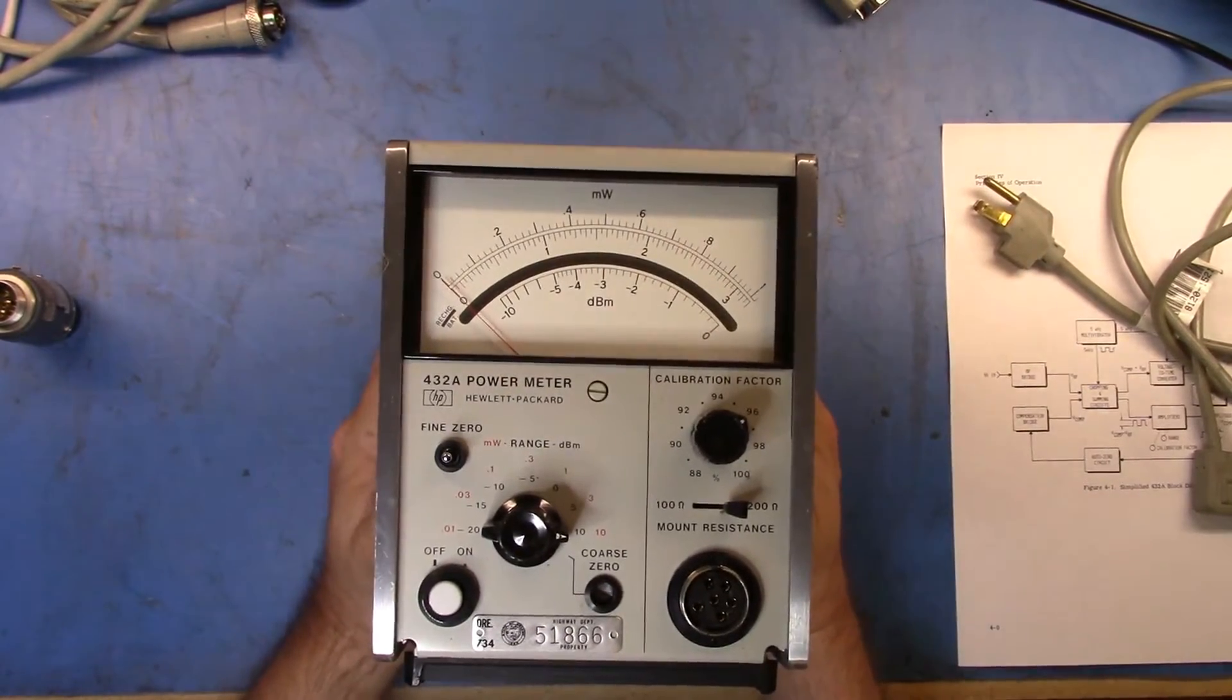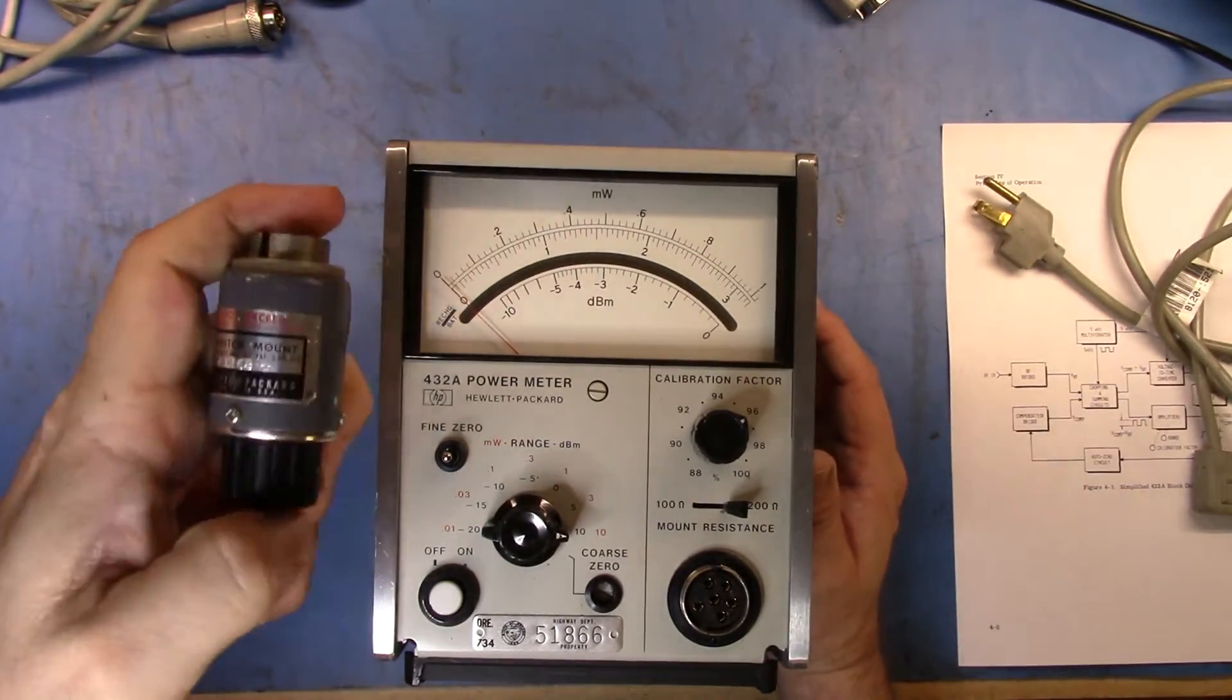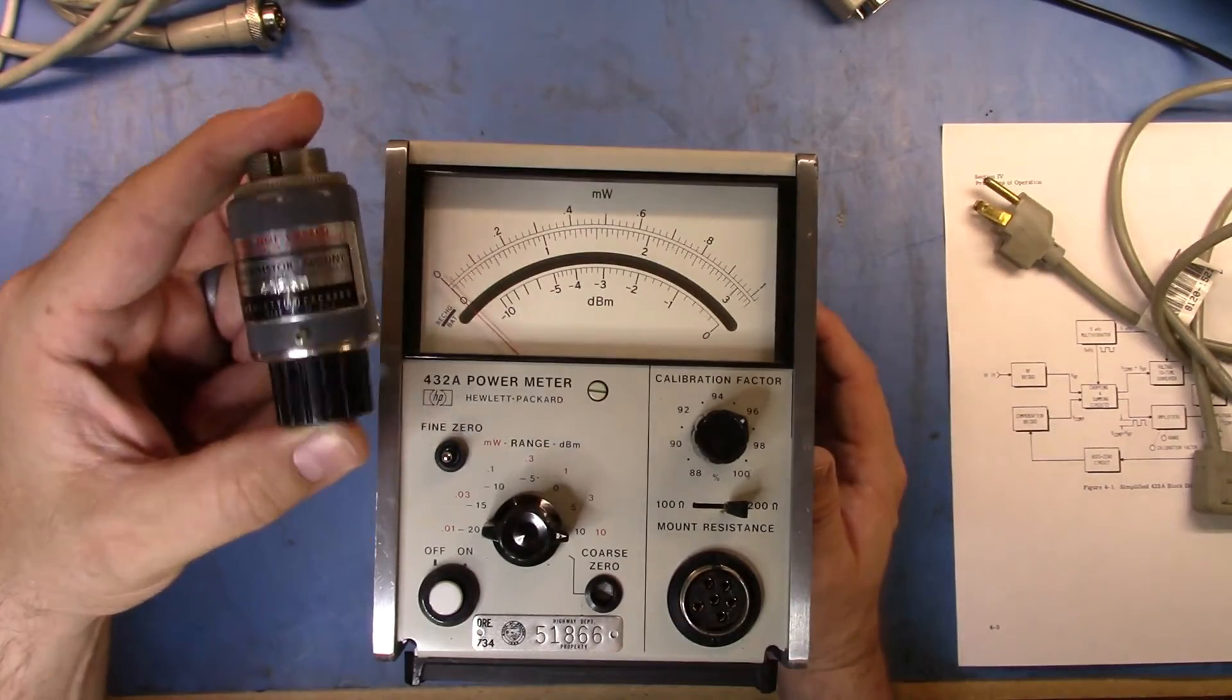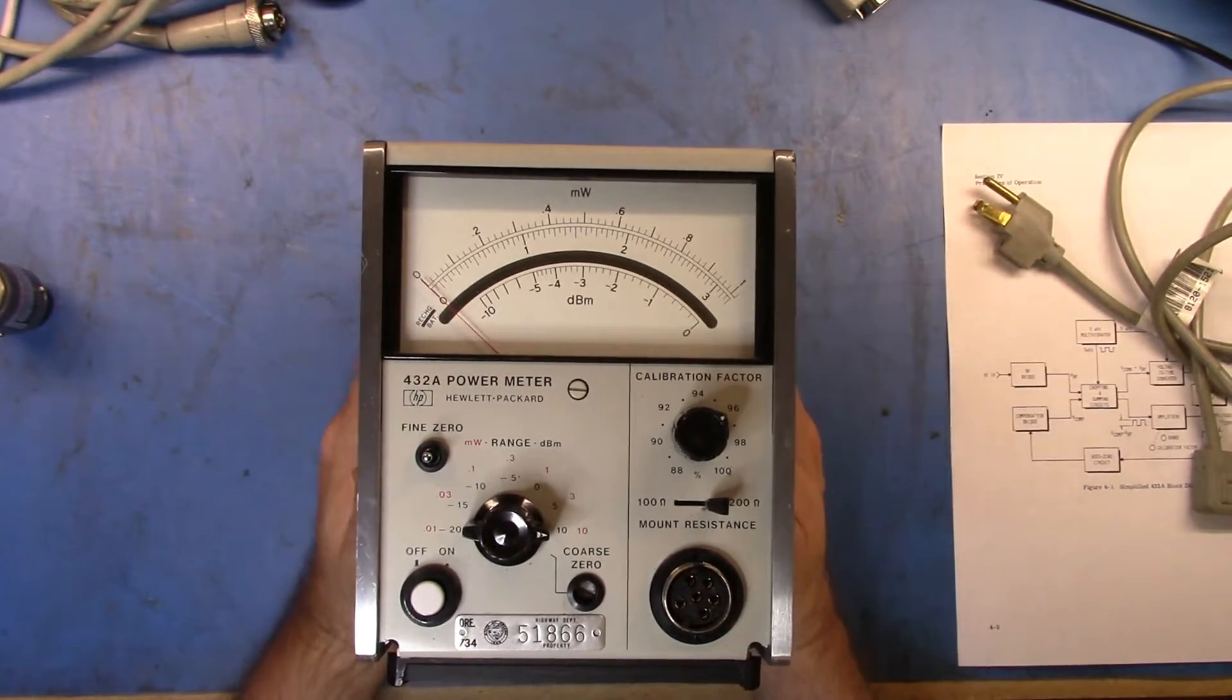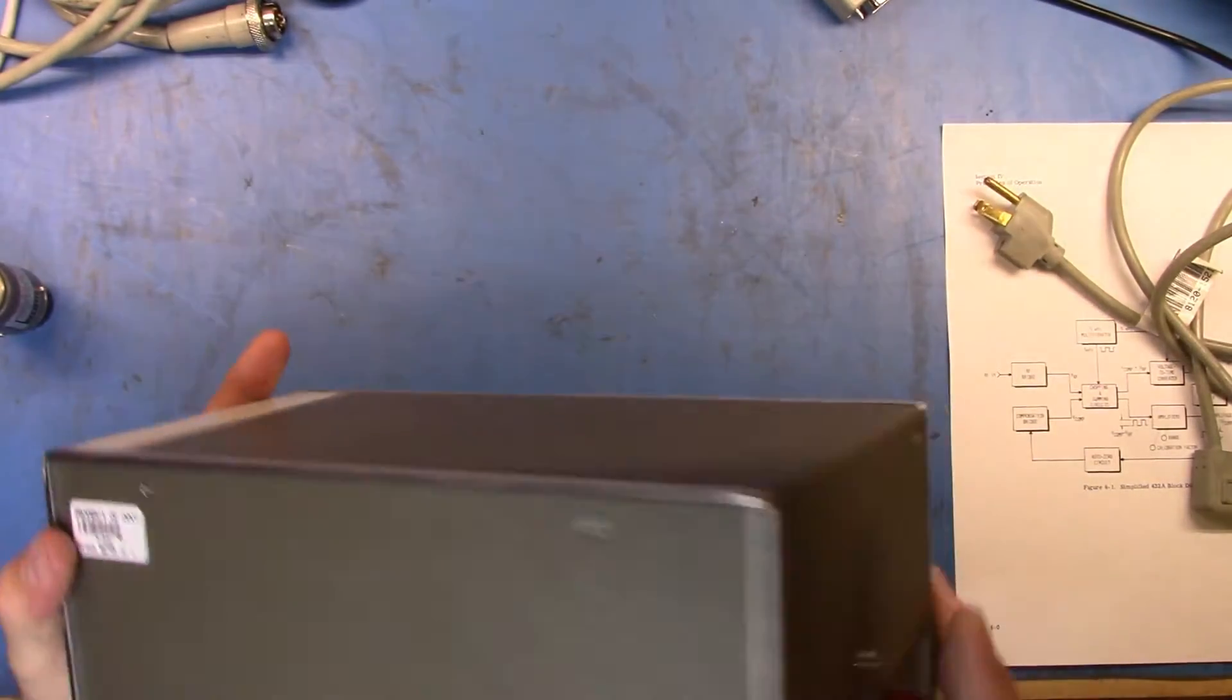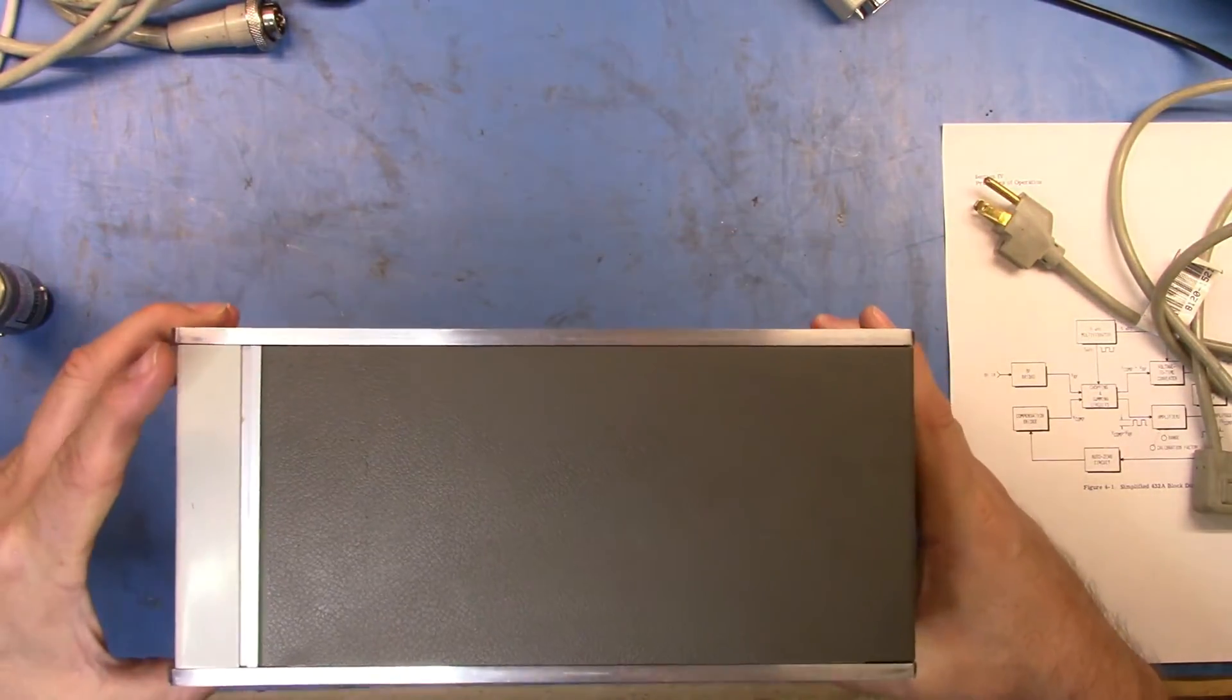It's an HP 432A power meter and an accompanying Hewlett-Packard 478A thermistor mount. This is the thermistor that is read by this meter. These meters are very accurate when you utilize on the back here these channels.